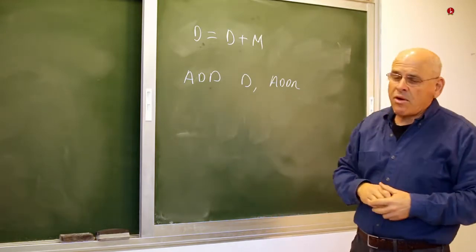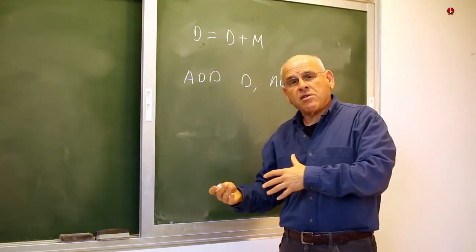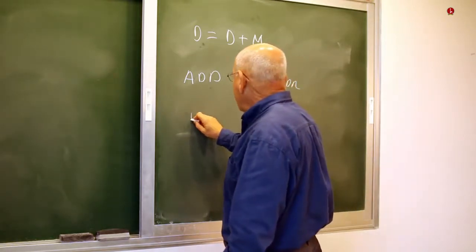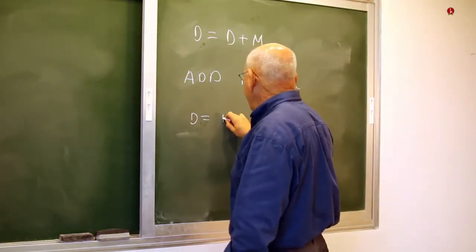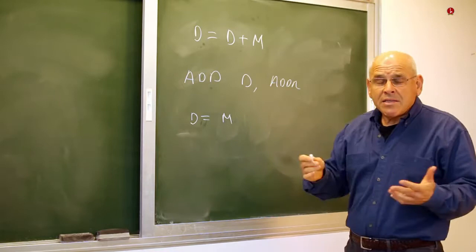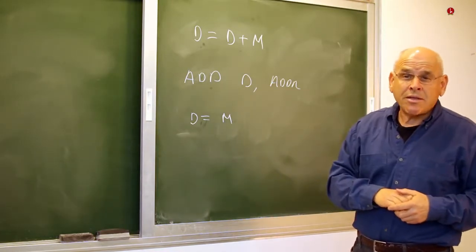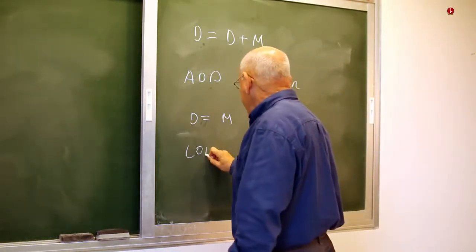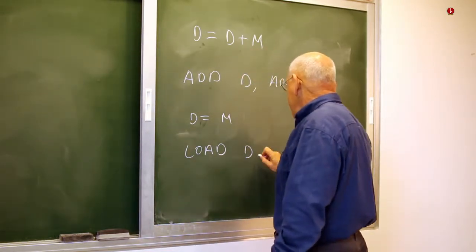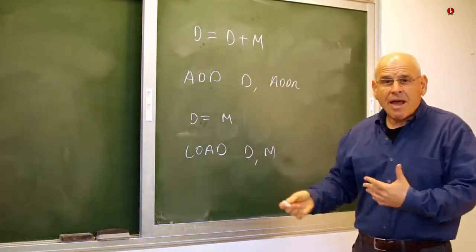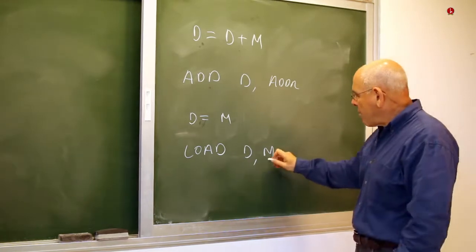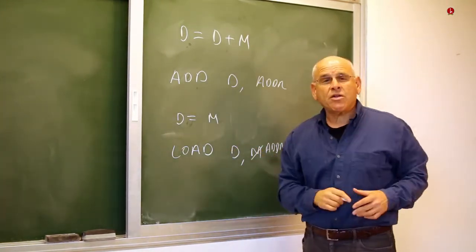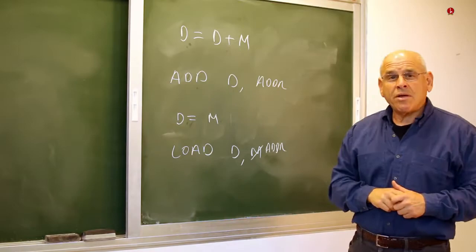Likewise, if you want to put the contents of one register in another register, in HEC you say something like "D equals M". Whereas in a normal machine language, typically it would say something like "LOAD D, M" or something like this. And once again, instead of M you can write an address and pack all this information into a single instruction.